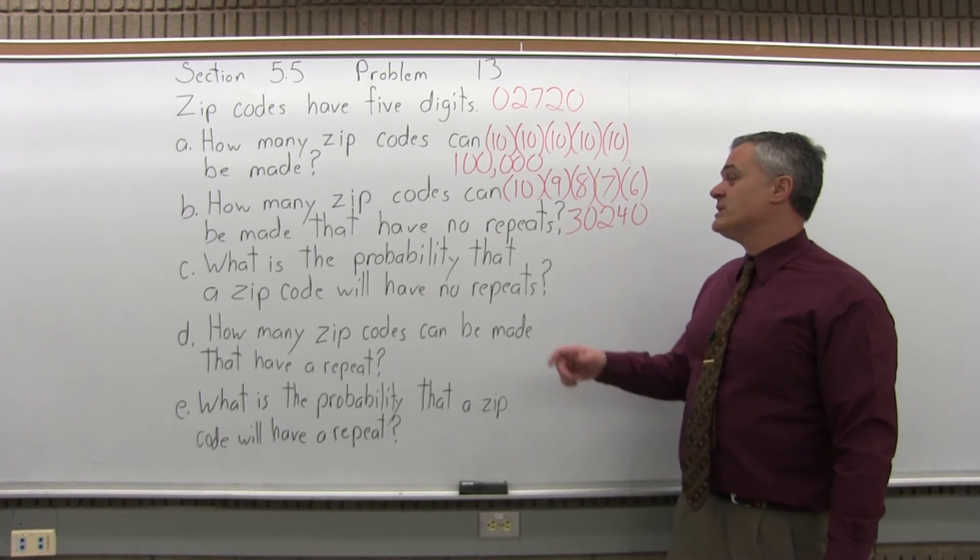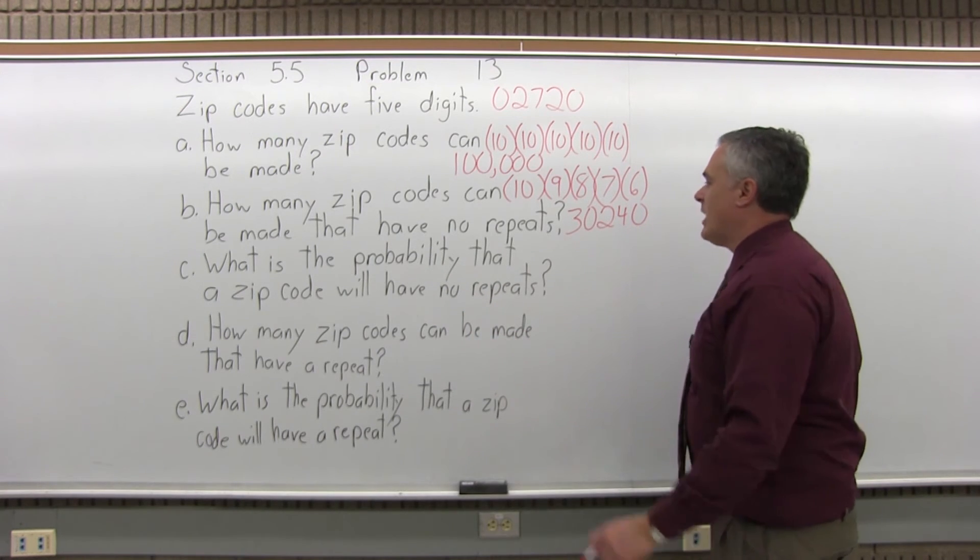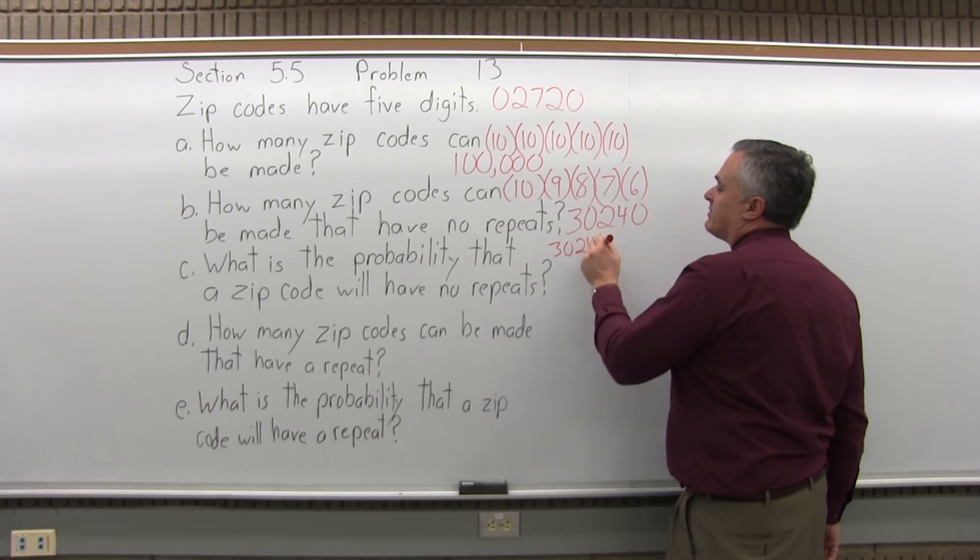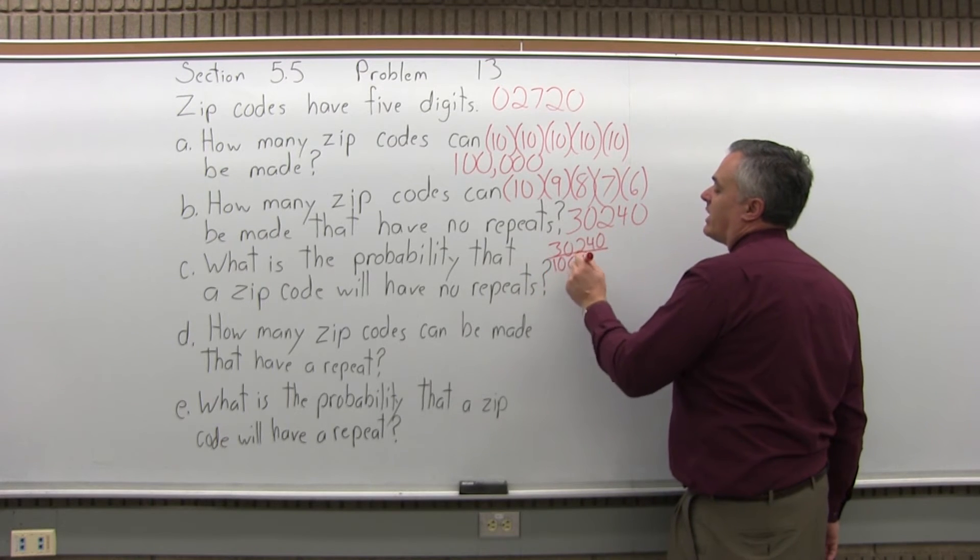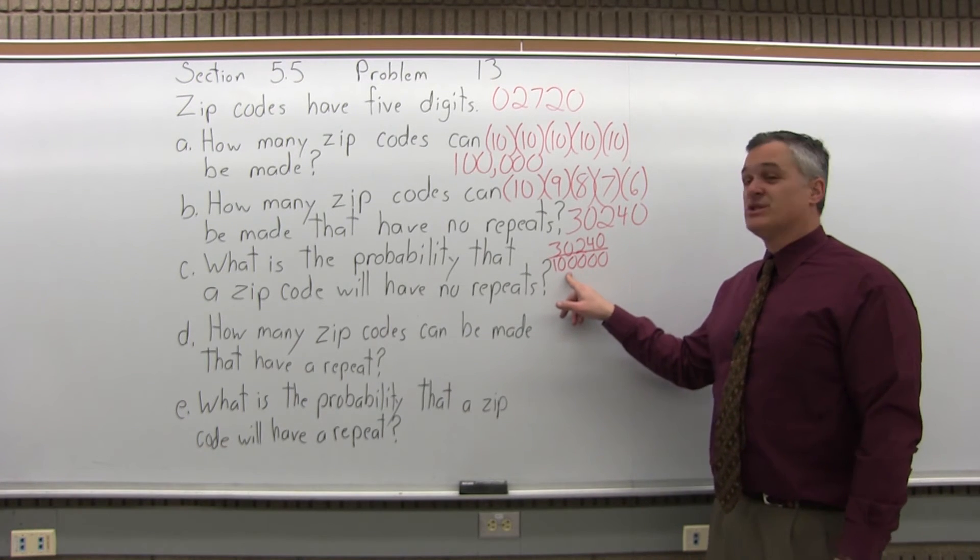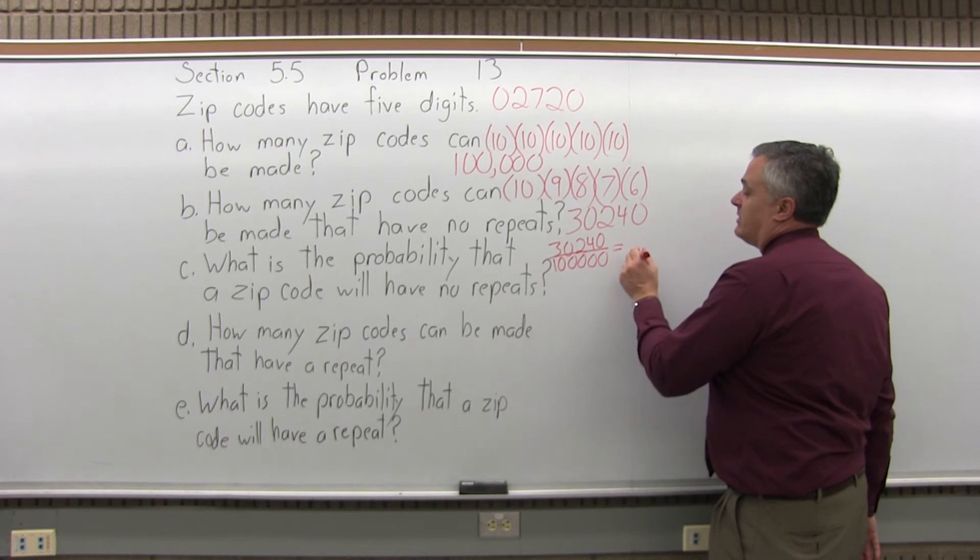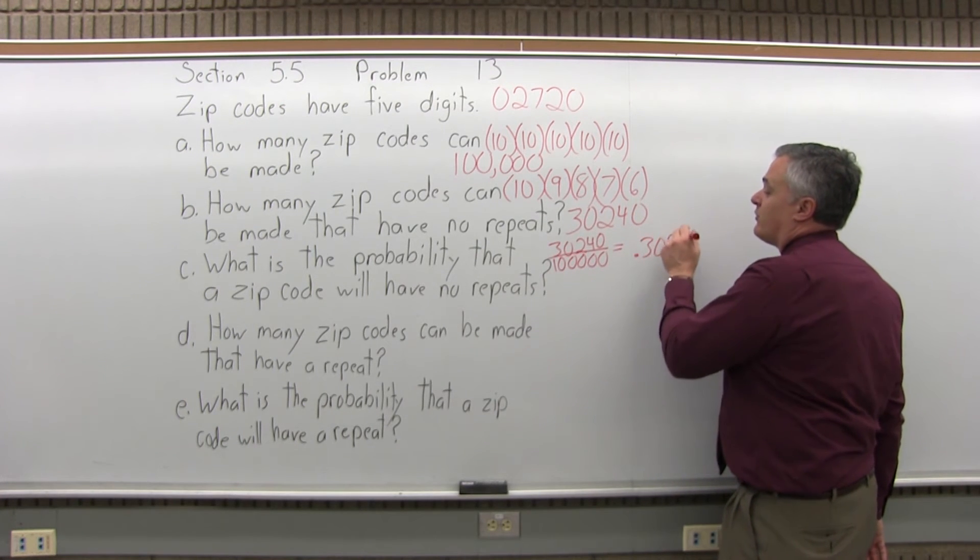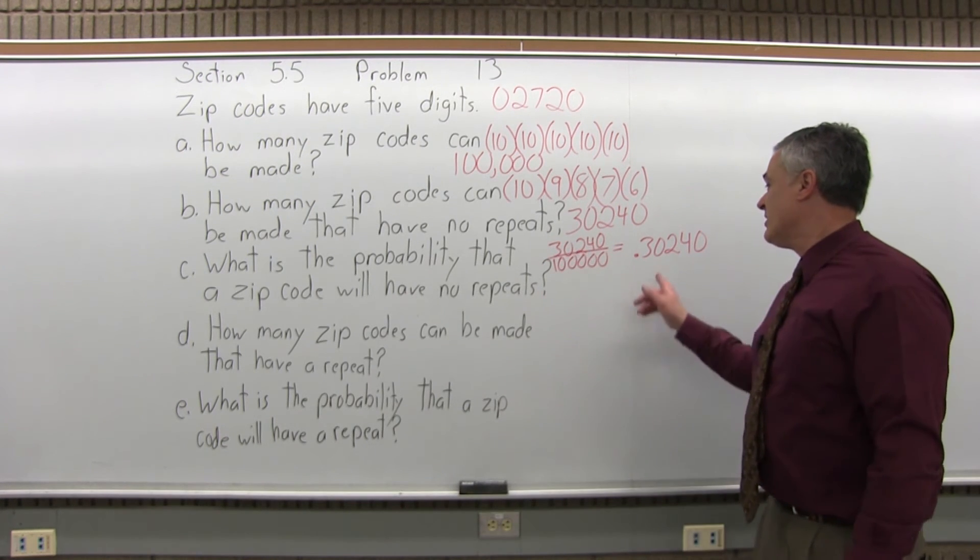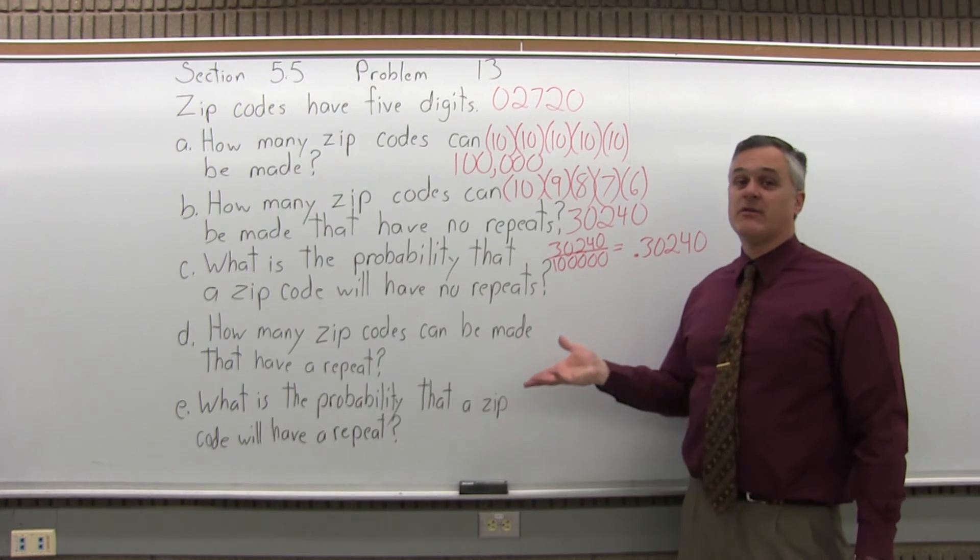Now, part C, what is the probability that a zip code will have no repeats? What's the probability of that? Well, there are 30,240 zip codes that have no repeats out of 100,000 zip codes that are possible. So if you divide that, this you can actually do because all the zeros, even without your calculator, you can certainly do it with your calculator, but it would come out to 0.3024. The zeros just move the decimal over. It's about a 30% probability, almost 30 and a quarter percent probability that your zip code would have no repeats.